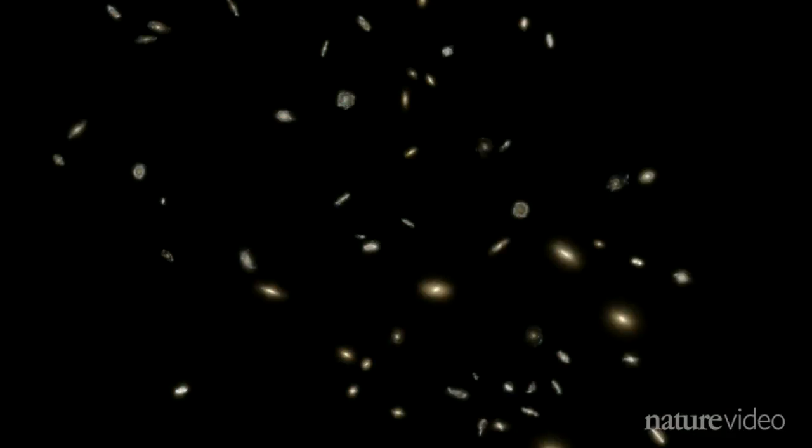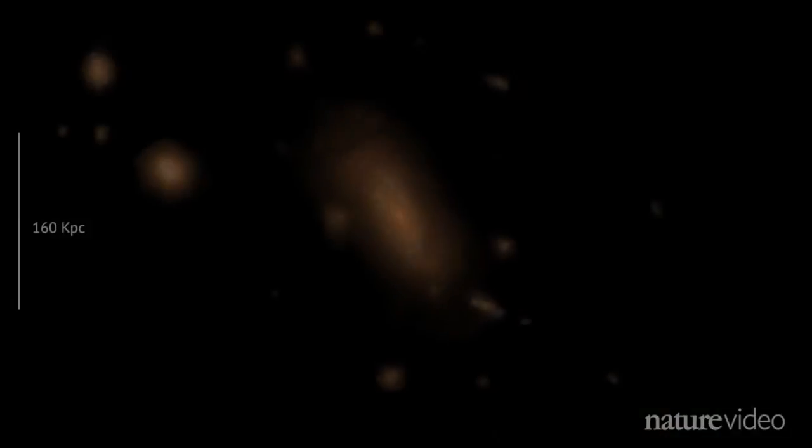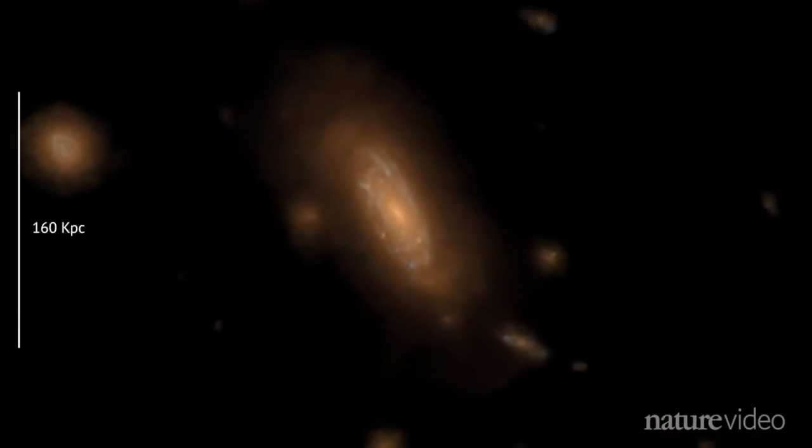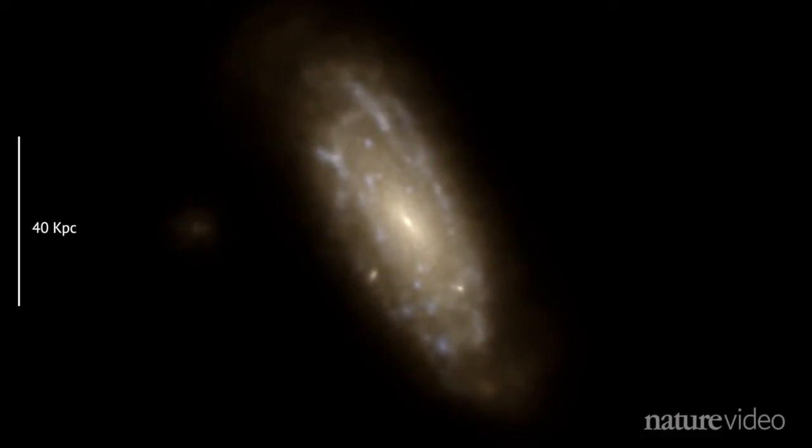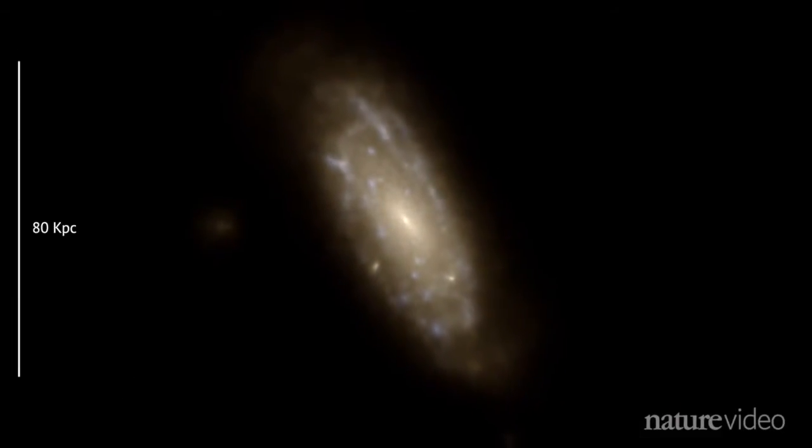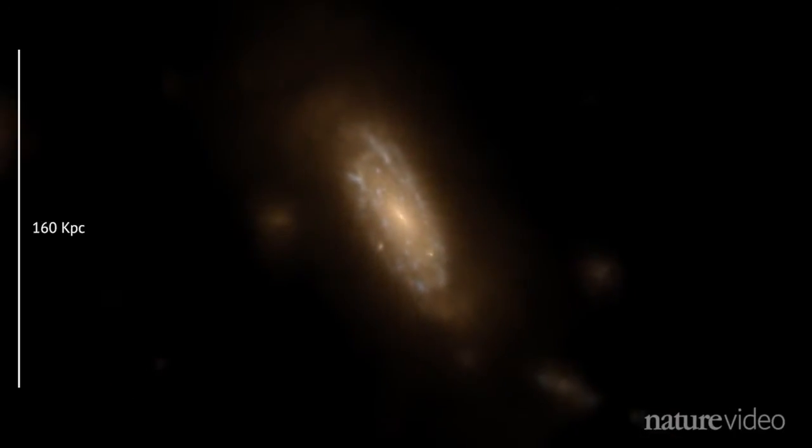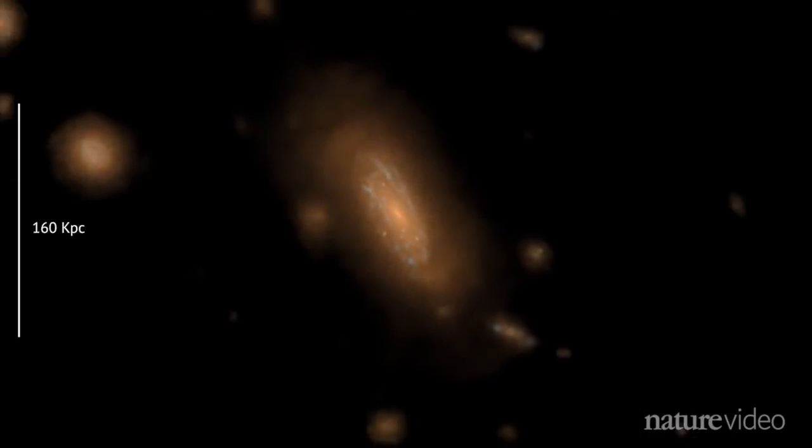A big challenge, the team say, was recreating the variety of galaxies we observe. The model's 40,000 galaxies include this spiral one, like our Milky Way. In fact, the simulation produces a world that's remarkably similar to the real universe, as we see it through our telescopes.